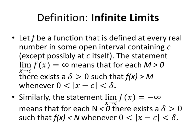So let's start with a definition. Let f be a function that is defined at every real number in some open interval containing c, except possibly at c itself. Remember with limits, we don't care what happens at c, we care what happens near c. So the statement limit as x approaches c of f(x) equals infinity means that for each M > 0 there exists a delta > 0 such that f(x) > M whenever x is close enough to c.